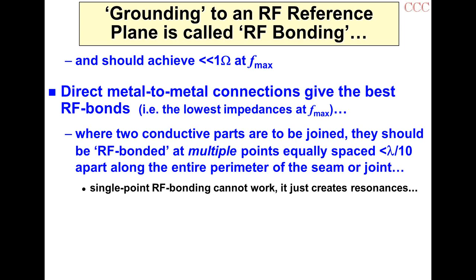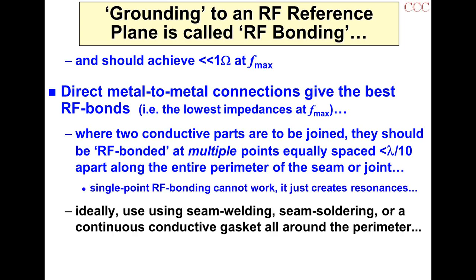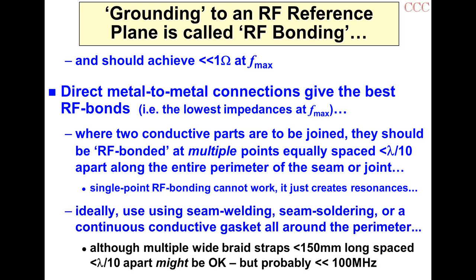So when you hear people talking about single-point grounding as a good EMC technique, tell them they're wrong. Ideally, you'd seam-weld along the joint — this is how the military builds things designed to withstand nuclear attacks. Alternatively, you might seam-solder or put a continuous conductive gasket around the perimeter. You might be able to use multiple wide braid straps if they're quite short — say less than 150 mm — and spaced less than lambda over 10 apart, though probably not effective above 100 MHz.